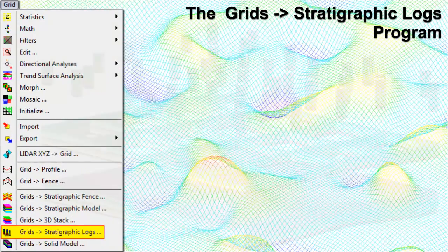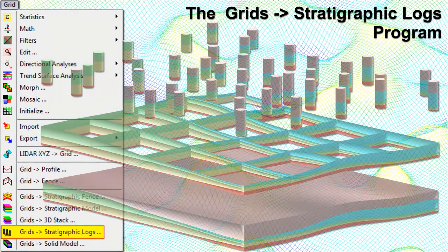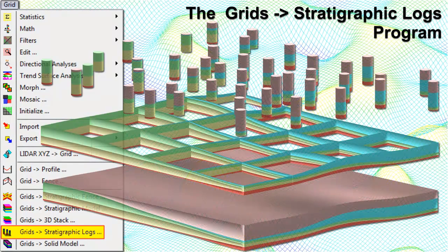The Grids to Stratigraphic Logs program will define or redefine the contacts within existing stratigraphic logs based on a list of one or more stratigraphic surface models. Sample applications include interpolating elevations from missing contacts within borehole files, such as lost circulation intervals, and predicting or estimating what a log might look like before the borehole is drilled.